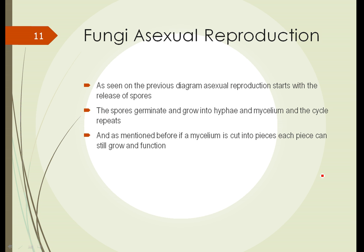Asexual reproduction begins with the creation of spore-producing structures, which release spores. The spores germinate and grow into hyphae, then mycelium, and the cycle repeats. If a mycelium is cut into pieces, each piece can still grow and function — that's the other method of asexual reproduction.